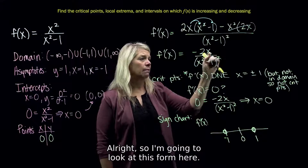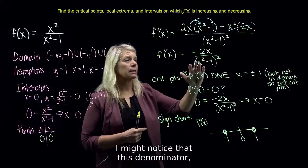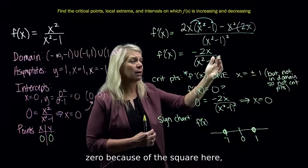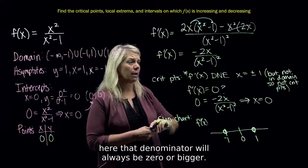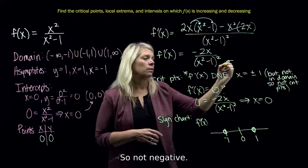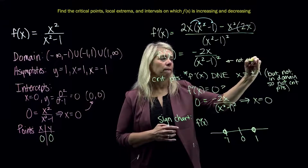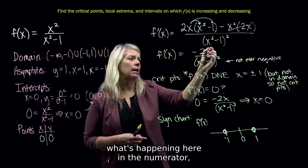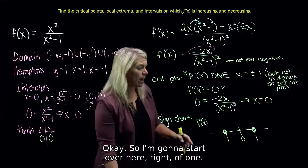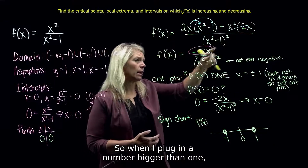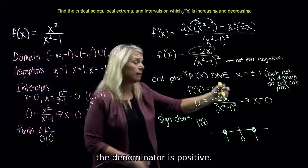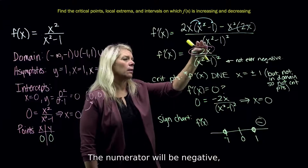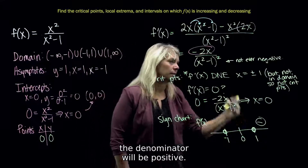Looking at this form, I notice that the denominator — because of the square — is never going to be negative. It will always be 0 or bigger, so not negative. When I think about the sign of the first derivative, really all I have to think about is the sign of the numerator. Starting right of 1: when I plug in a number bigger than 1, the numerator will be negative and the denominator is positive, so negative over positive is negative. Between 0 and 1, like 1/2, the numerator will be negative and the denominator will be positive — negative over positive is negative.